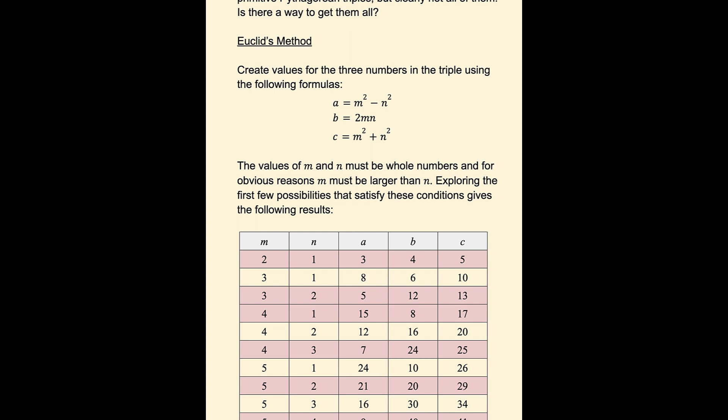The way this works is we're going to create values for the three numbers using the following formulas. So for A, we're going to have m squared minus n squared. For B, we're going to have 2mn, and for C, we're going to have m squared plus n squared.